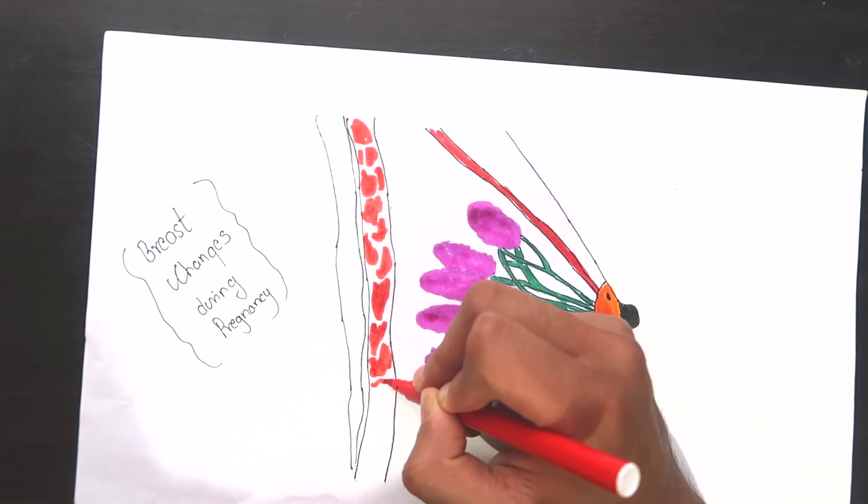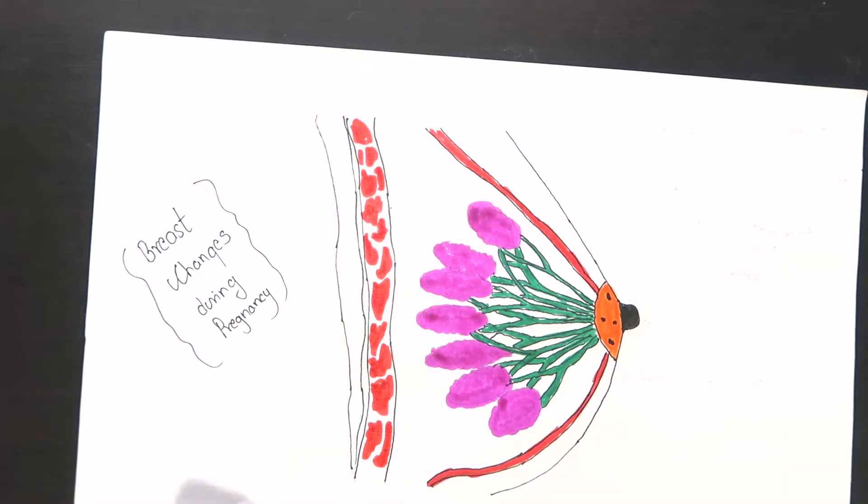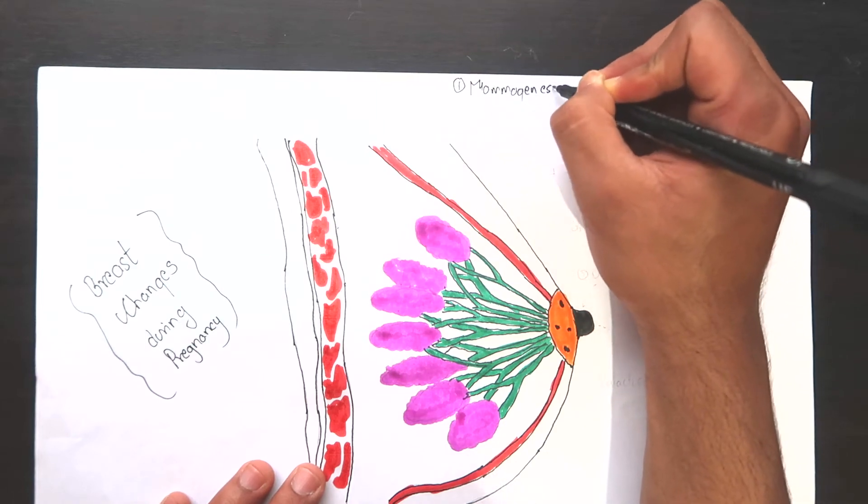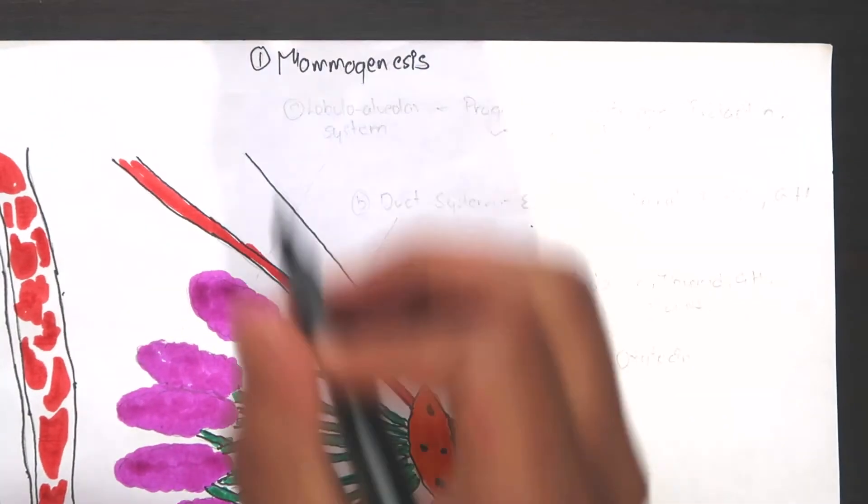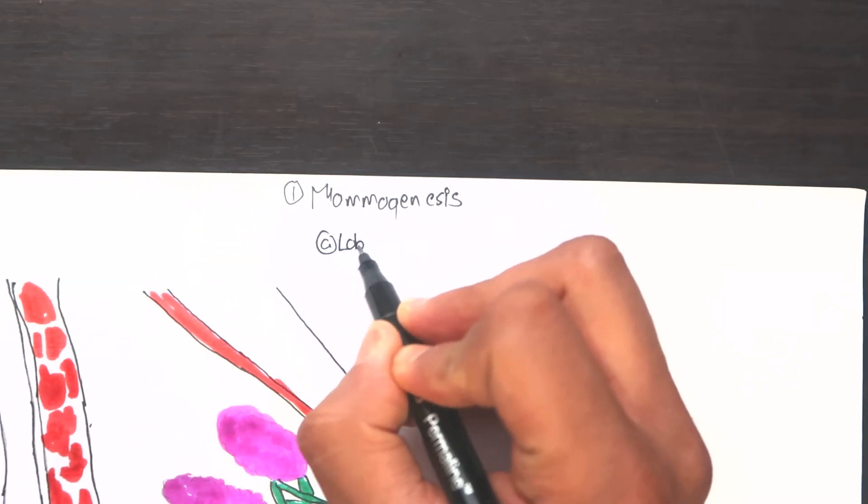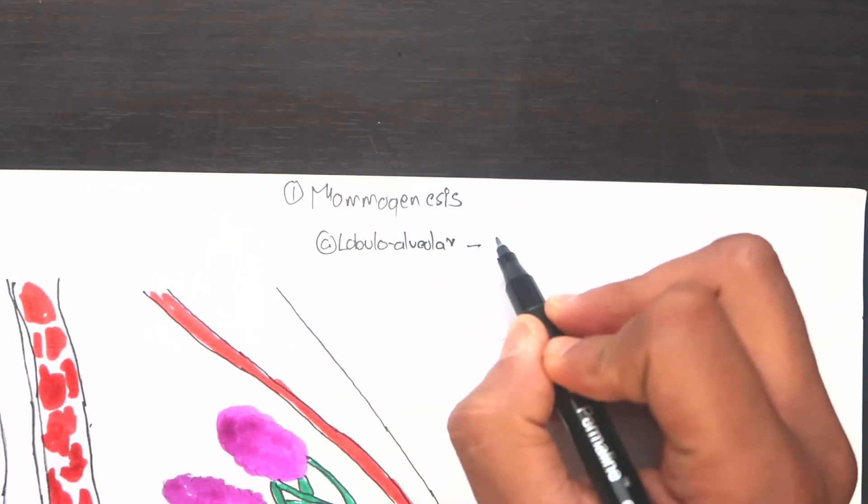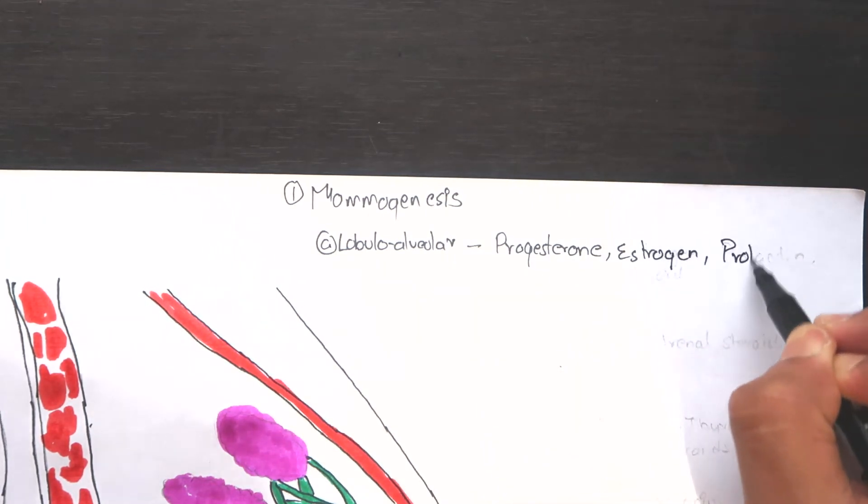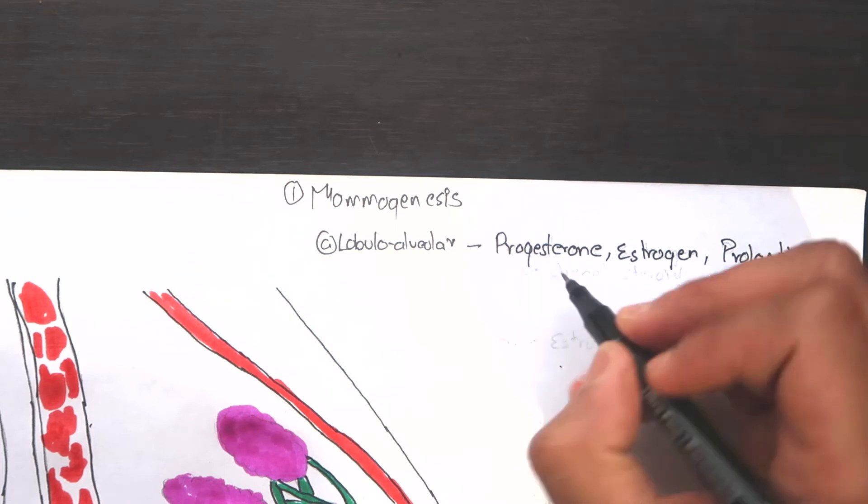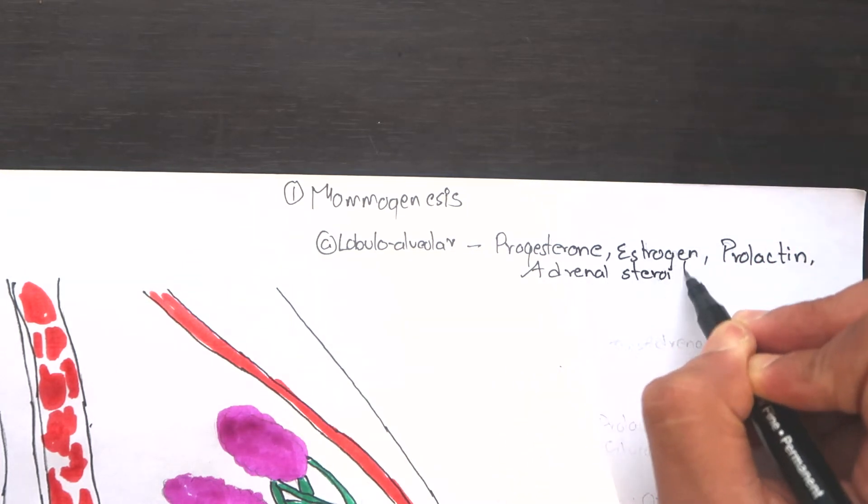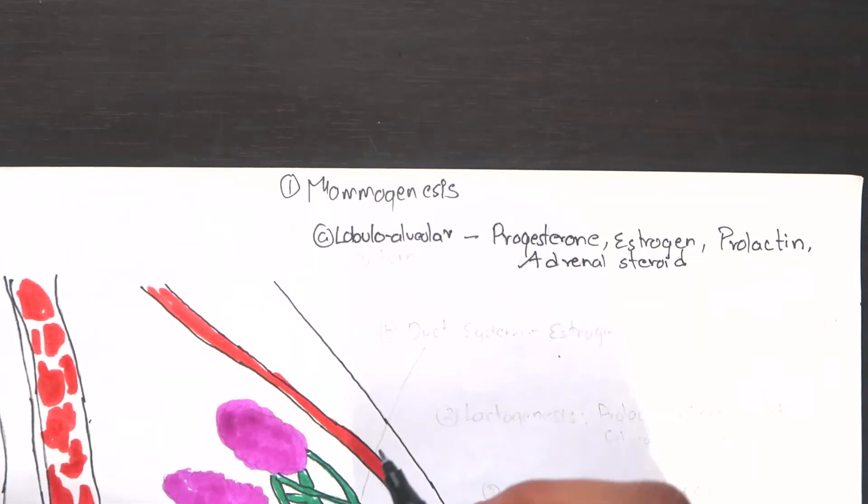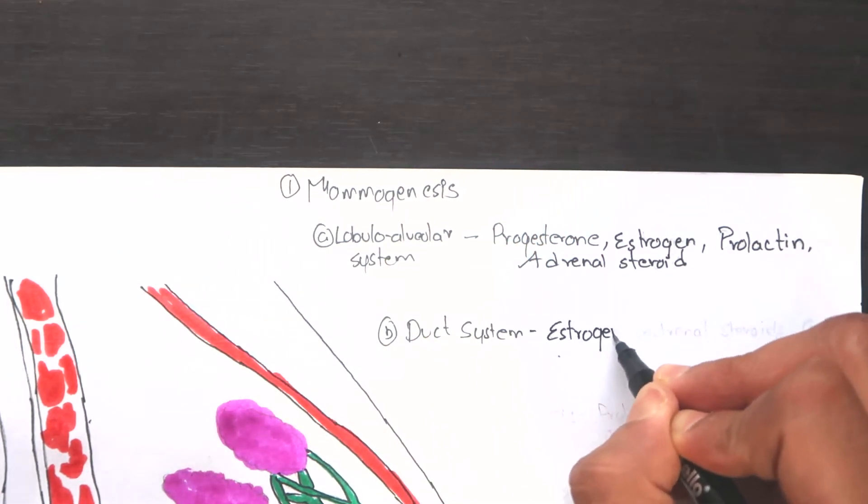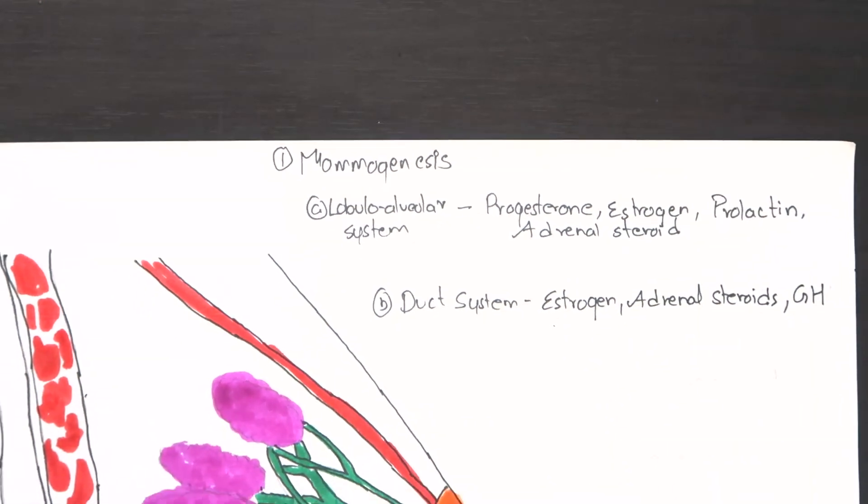The physiological basis of lactation is divided into four phases. First, mammogenesis or preparation of breasts. Pregnancy is associated with remarkable growth of both ductal and lobulo-alveolar system of the breast. The hormones responsible for lobulo-alveolar system are progesterone, estrogen, prolactin, and adrenal steroids. And those responsible for ductal system are estrogen, adrenal steroids, and growth hormone.